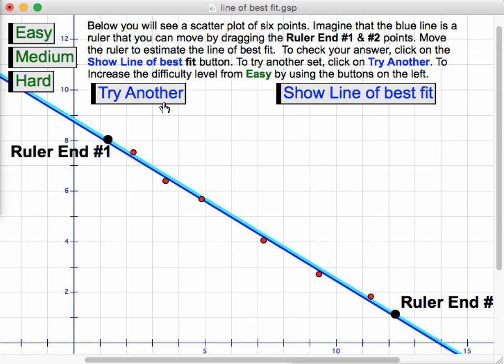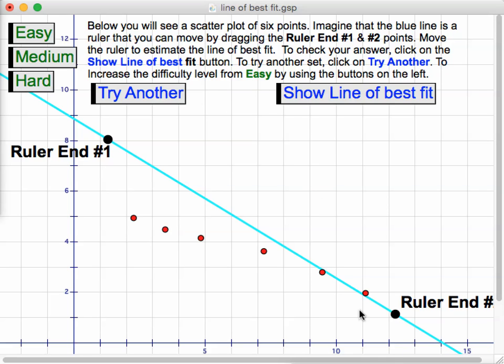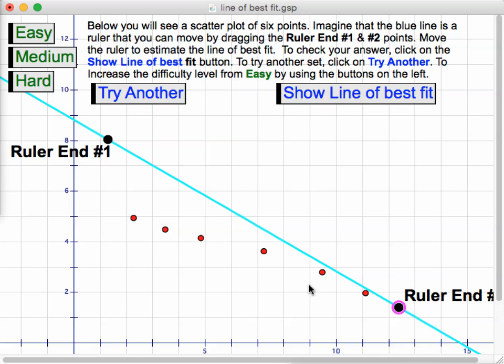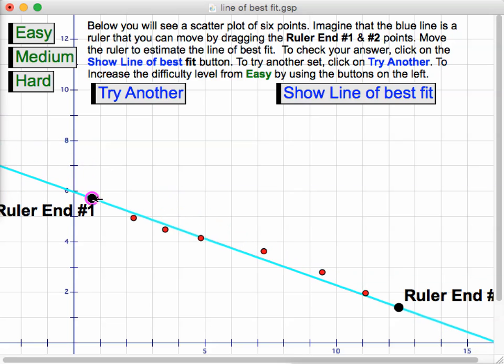Once they're happy with that, they can try another and it'll generate another six points that they can try again and guess the line of best fit.